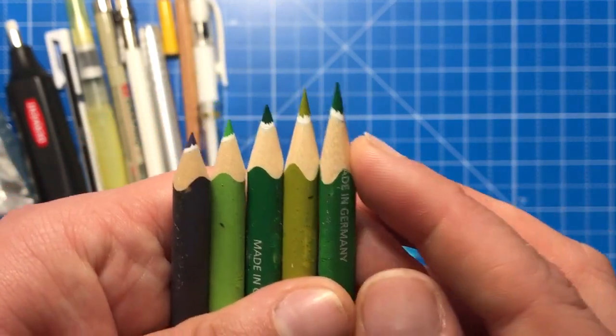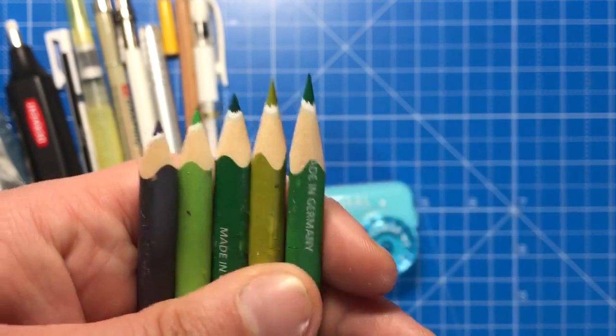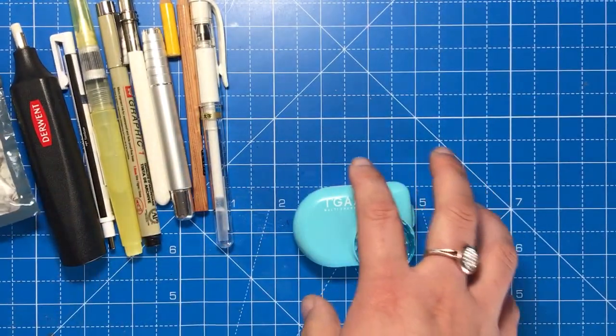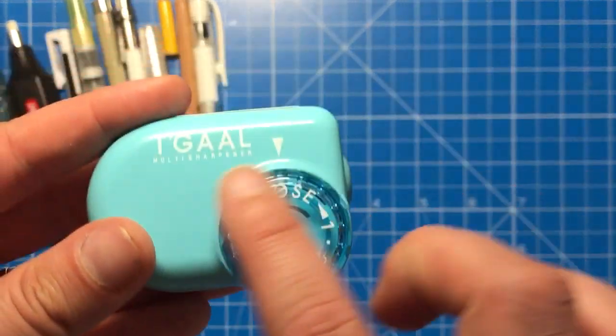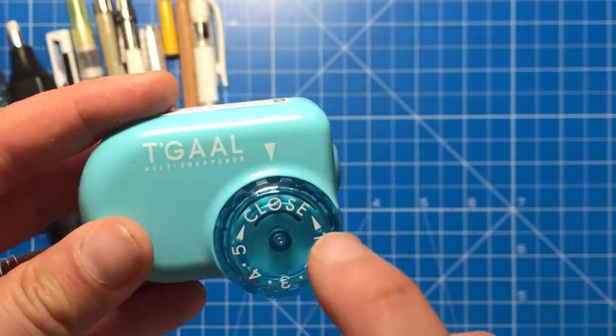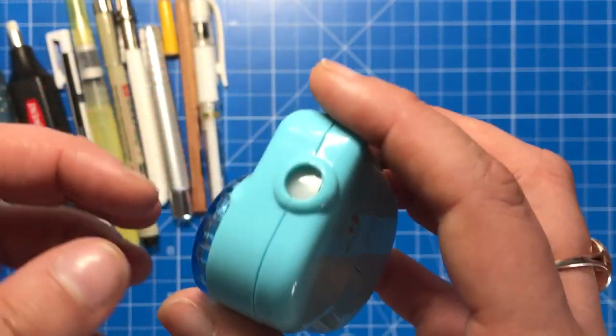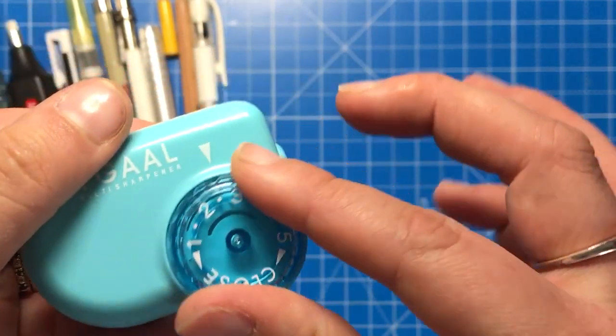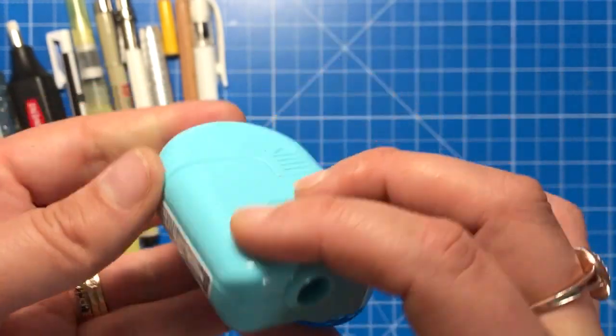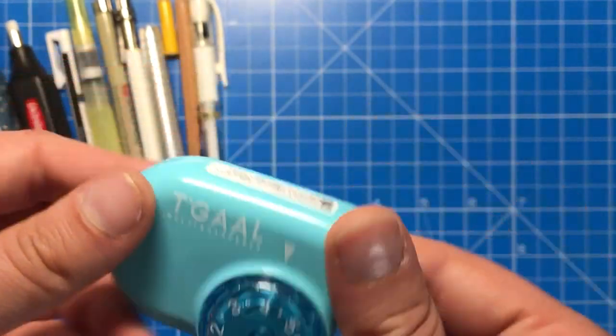For your harder pencils you can go right up to five which is a really long and strong point. This is an incredible tool for anybody that's got coloured pencils because you can change and adjust the length of the point depending on what kind of pencil core you've got. That just turns around like that. Super simple and all the shavings get collected in here as well.